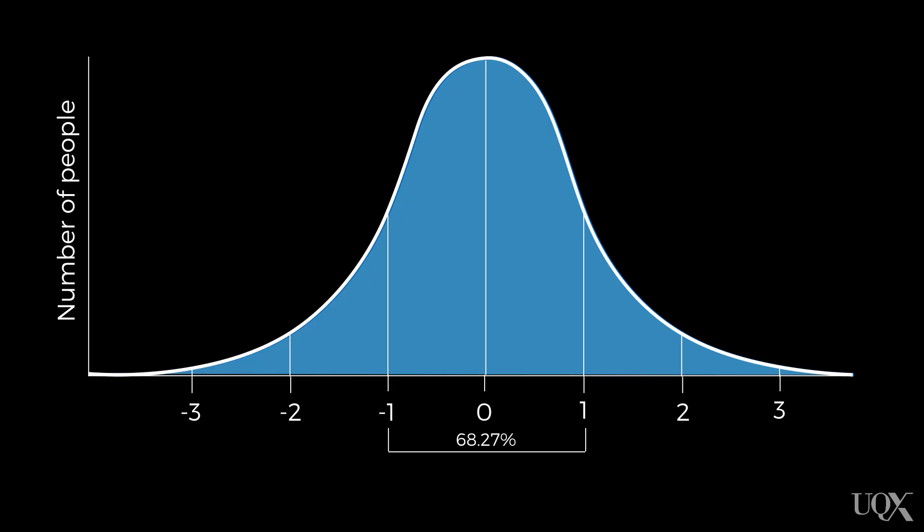Now, we can tell how small or large this score is because we know the properties of the standard normal distribution. For example, we know that about 68 percent of scores are within the region of plus or minus one standard deviation. We know that about 95 percent are within two standard deviations. Pretty much most of the scores are within three standard deviations.